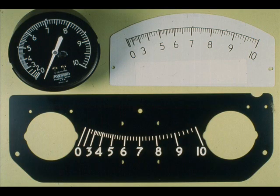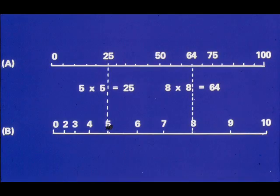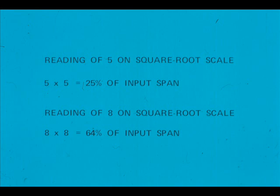When calibrating flow transmitters, it is often necessary to work with square root scales. One must calculate the percent of input span represented by a given reading on the square root scale. Scale A represents a 0 to 100 linear scale, and Scale B is a 0 to 10 square root scale. Notice that when a number on the square root scale is squared, it equals the number on the direct scale immediately above. To convert a reading on a square root chart to percent of span input, it is only necessary to square the reading and add percent.